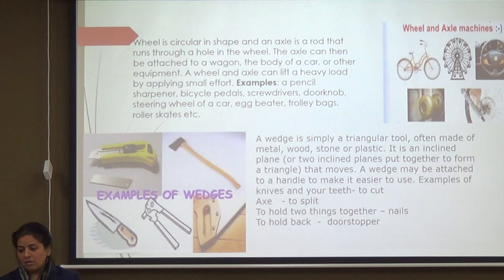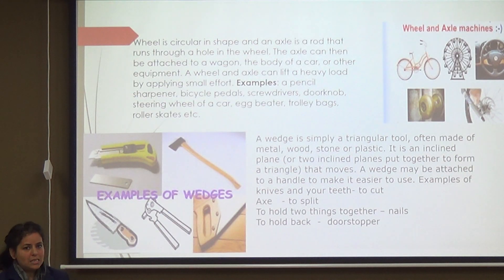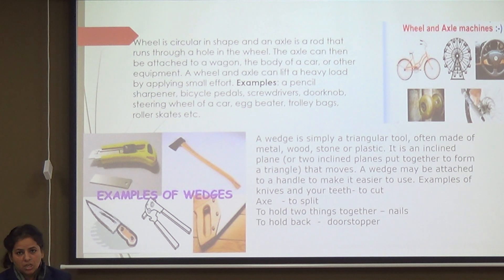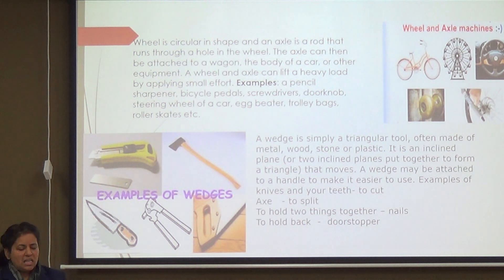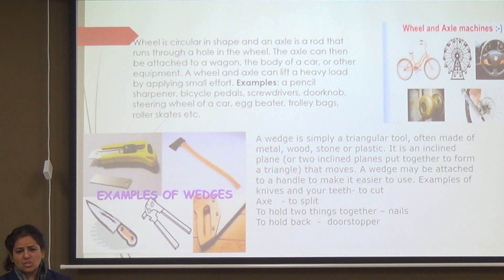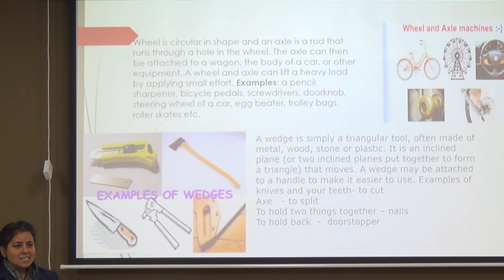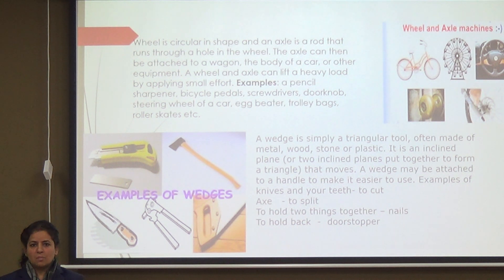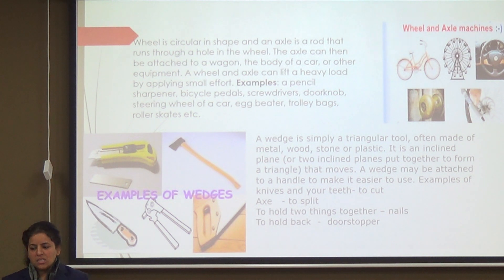The next machine is the wheel and axle, which as mentioned earlier was one of the earliest machines used by early humans. Examples include bicycles and school buses, which all have wheel and axle. The wheel is circular in shape, and the axle is the rod that connects to the wagon or vehicle, through which movement is made possible.